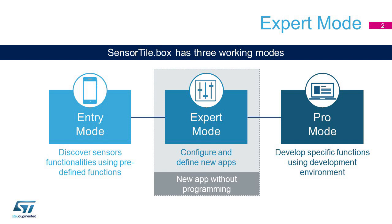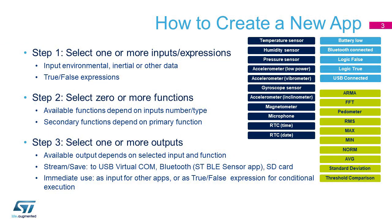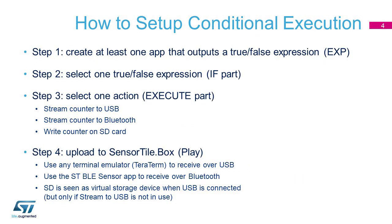SensorTile.Box has three working modes. The second one, Expert Mode, lets the user build some relatively simple programs without writing lines of code, but using a graphical wizard. Creating a new app for SensorTile.Box means selecting inputs in blue, functions in green, and outputs. Conditional execution can be considered as a branch of inputs and functions, enabling other branches of inputs and functions.